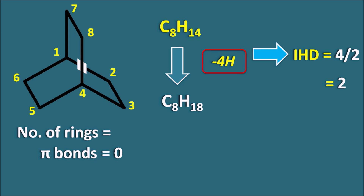Since the IHD value is 2, the number of rings to be considered is 2. This is confirmed by the number of cleavages required to open the compound: cleaving two bonds fully opens the bicyclo ring to an open-chain compound. So the IHD value is 2 plus 0 (no pi bonds), which equals 2. Calculation from the structure and from the molecular formula both give the same value of 2. For any given structure, we can easily identify the IHD value by counting the number of rings and pi bonds.